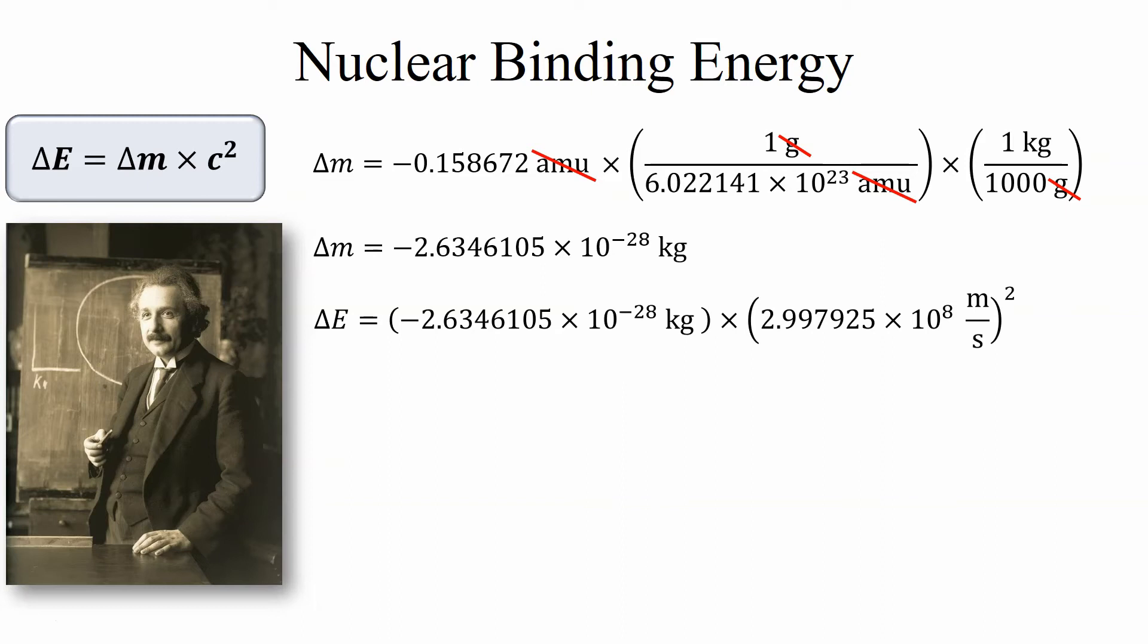Now we plug this into E equals MC squared and we get this number. Let's take a look at those units kilograms times meters squared per second squared. Well this is the same as joules. It's a one-to-one ratio of joules to kilograms meters squared per second squared. This basically tells us the amount of energy that we would get out after constructing one fluorine-19 atom.